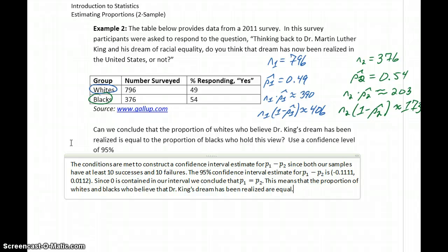The question was asking, can we conclude that the proportion of whites who believe Dr. King's dream has been realized is equal to the proportion of blacks who hold this view? So yes, the data supports this conclusion.